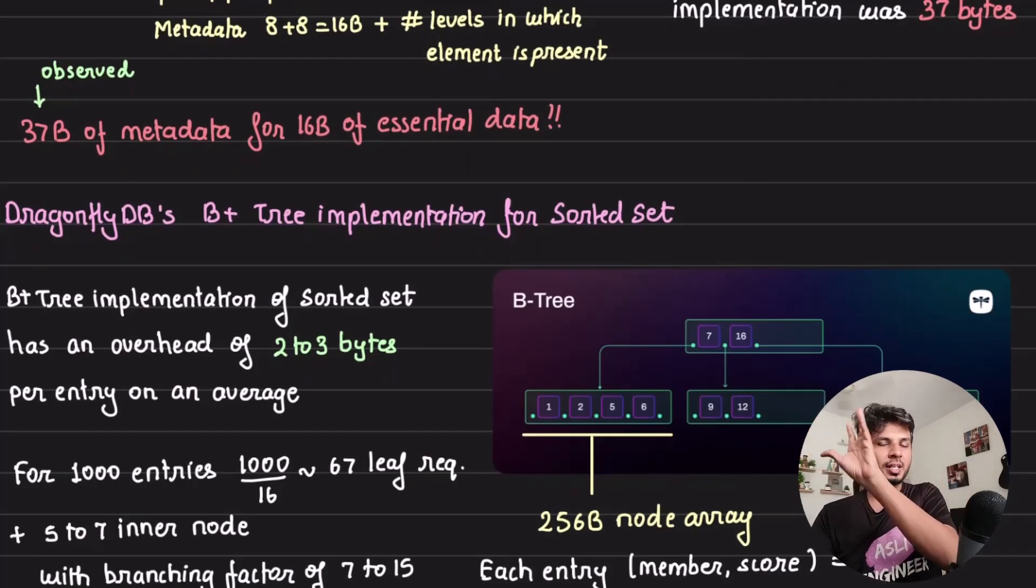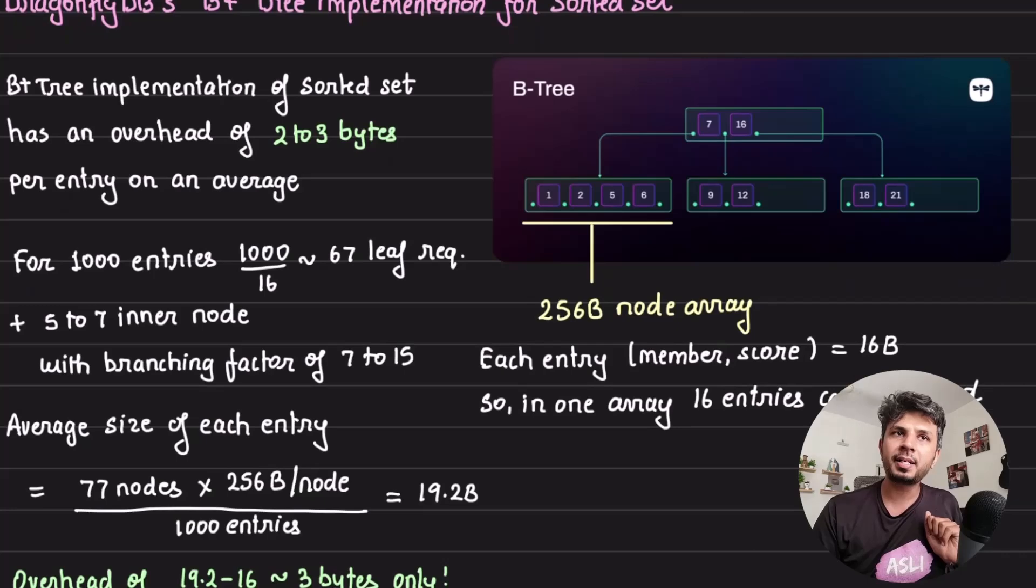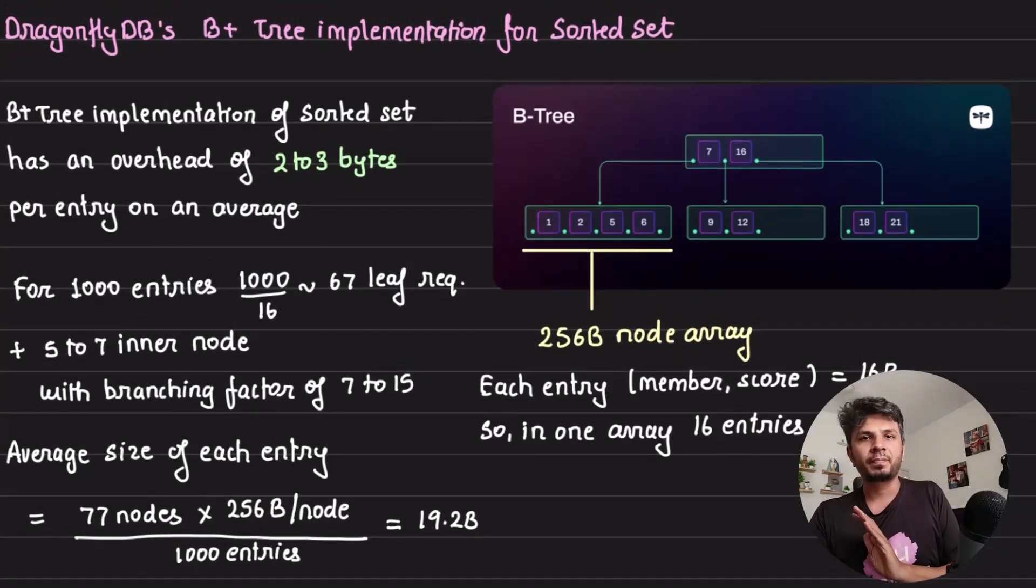37 bytes overhead is an important figure. Let's keep that in mind. What DragonflyDB did is they implemented it using B+ trees. Let's understand what B+ trees do and then measure the overhead.